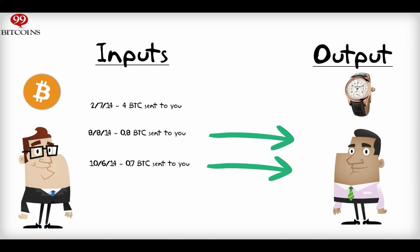Once you use an input to pay for something, it is considered spent, and you can't use it again for other outputs. Bitcoin rules state that you can't use just part of an input.